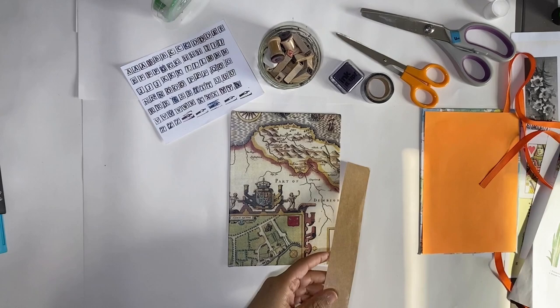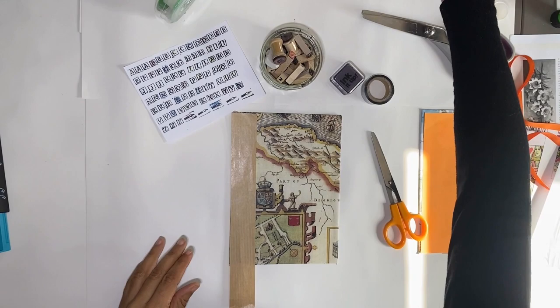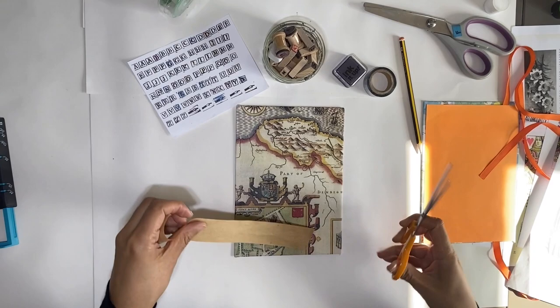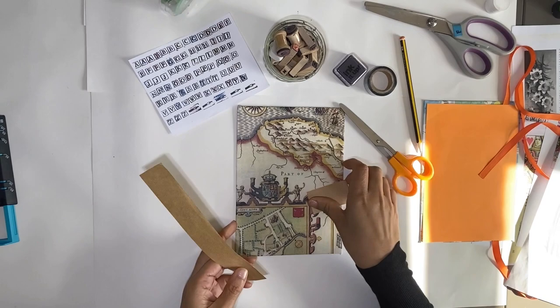Now we can start decorating the front cover. So really use whatever materials that you have. I've got some stamps here, some craft paper. So really just have fun with it and just go with whatever you like. It really is your journal, so make it your own.